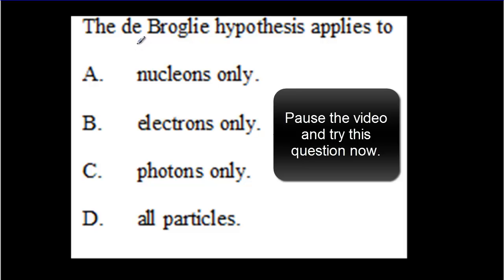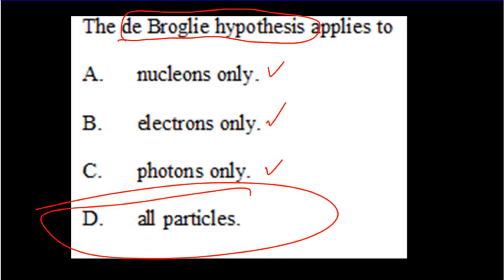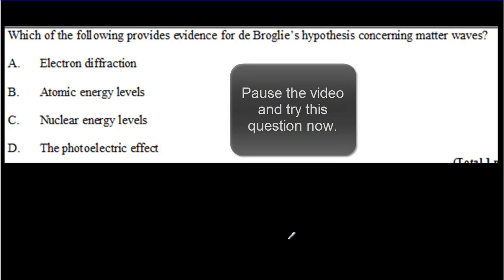Another IB question about the de Broglie hypothesis: the correct answer is D. It can even apply to baseballs — it's just that there's nothing small enough in the universe for the baseball to show its wave nature and diffract.